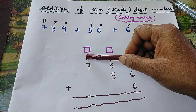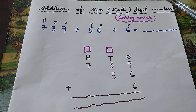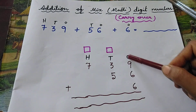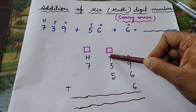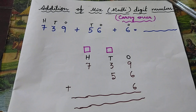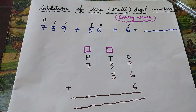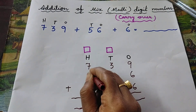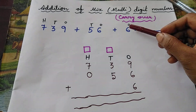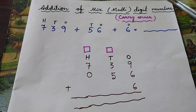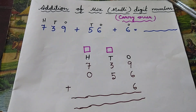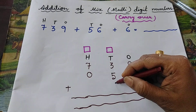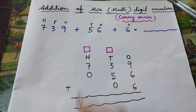Now go to the second number: six belongs to ones place, so in the ones column write six; five belongs to tens place, so in the tens column write five. In the hundreds column there is no digit, so write zero. Now for the third number — it is only a single digit — six belongs to ones place, so write six in ones column. In the tens and hundreds columns there is no digit, so write zero in both.